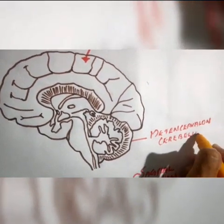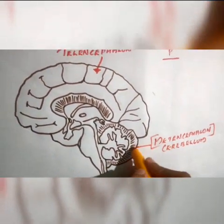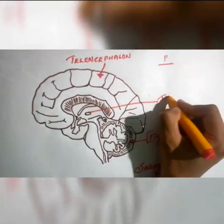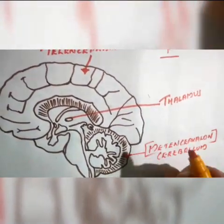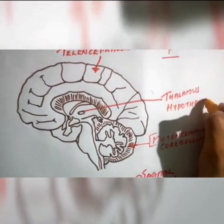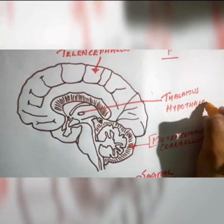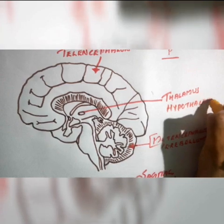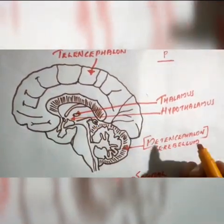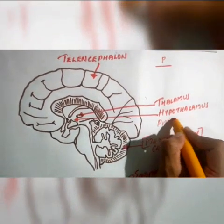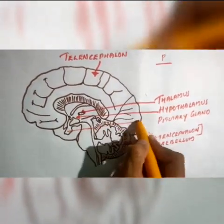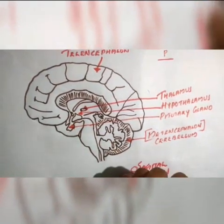In the center of the cerebral cortex, you have the thalamus. Below the thalamus, you have the hypothalamus — hypo means below, so below the thalamus means the hypothalamus. Below the hypothalamus, we have the pituitary gland, which is the main endocrine gland in the human body.